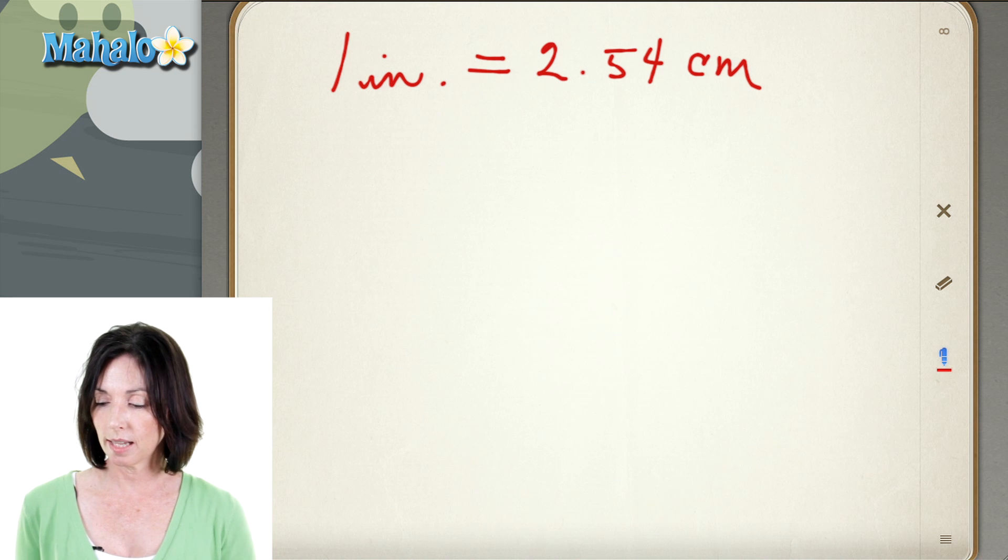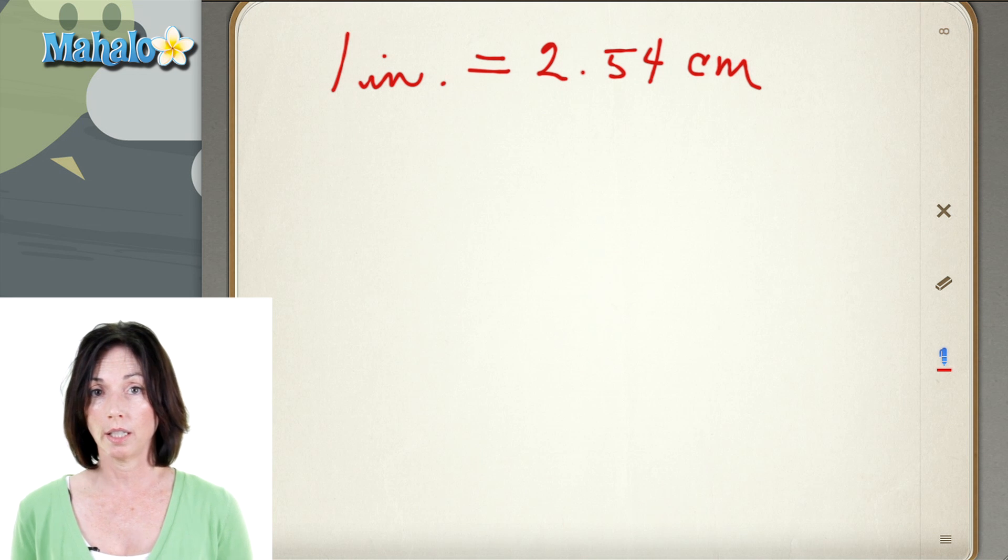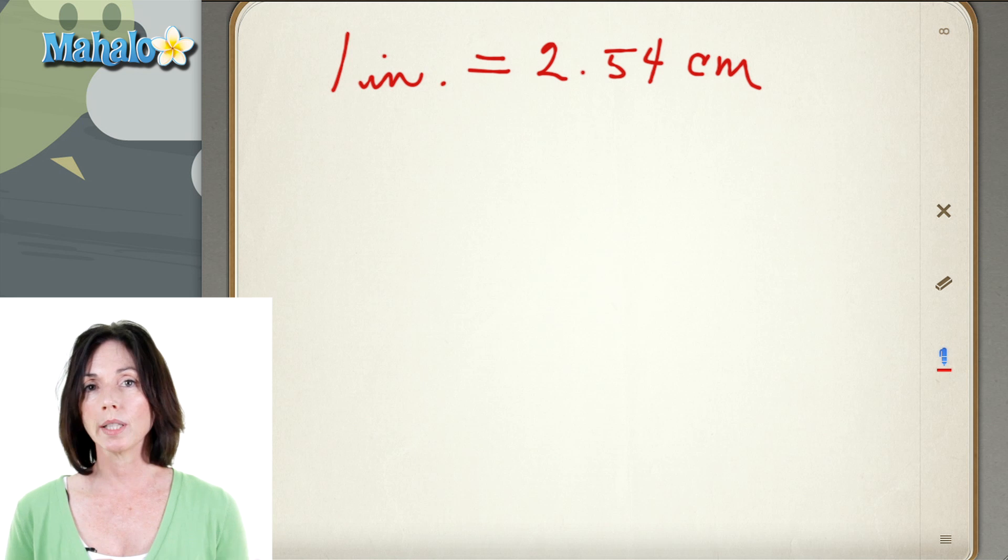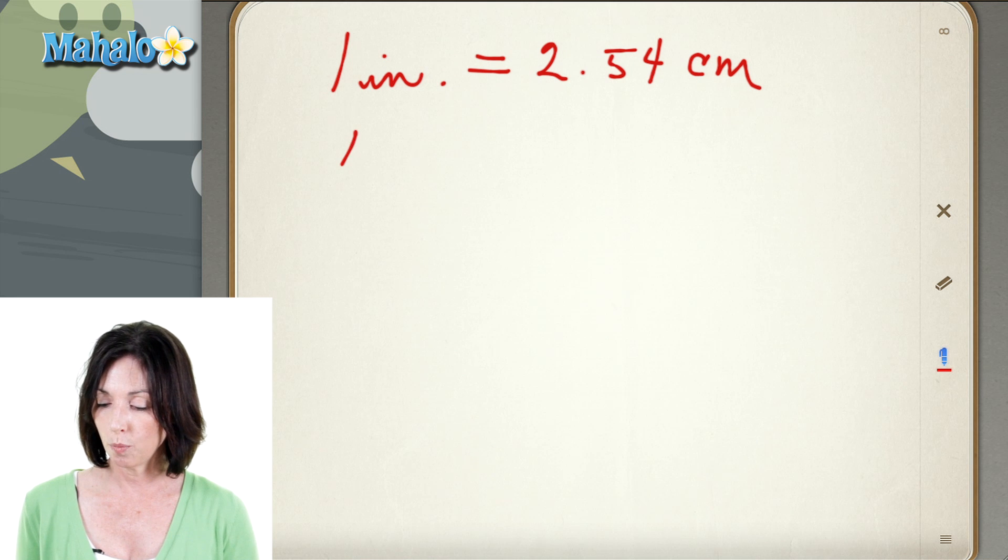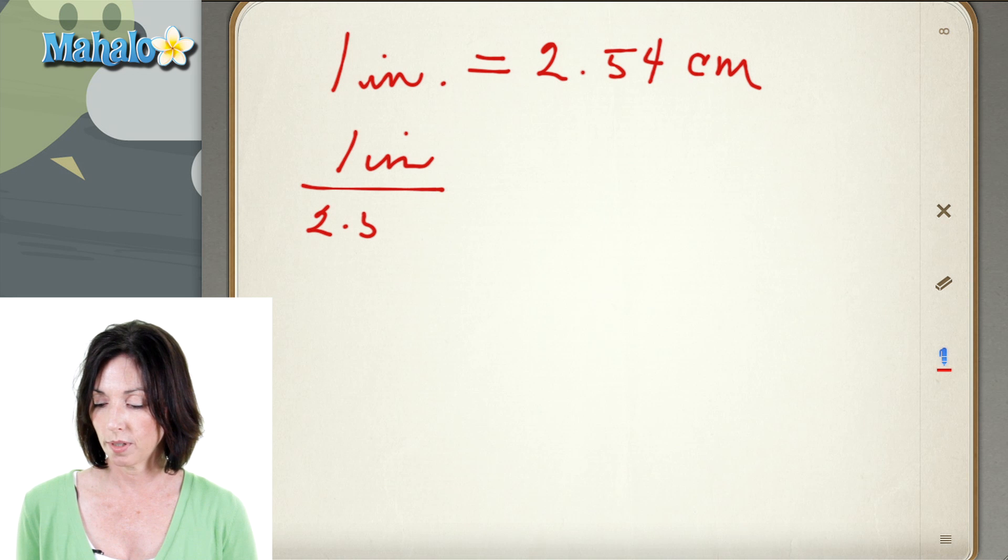So let's say I want to convert 2 inches into centimeters. Well on one side of the equation I'm going to have my conversion factor. So for every 1 inch I have 2.54 centimeters.